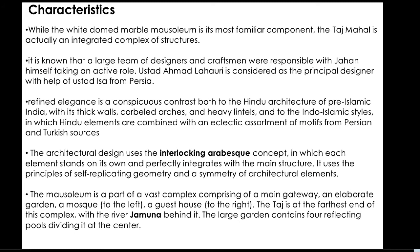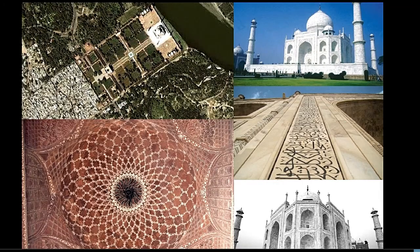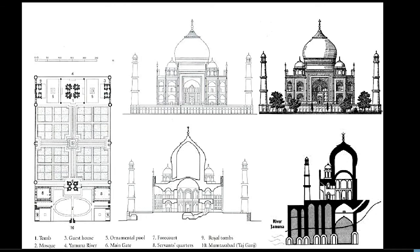The large garden contains four reflecting pools dividing it at the center. Here is the exterior splendid view of the Taj Mahal, along with its elevation and floor plan.